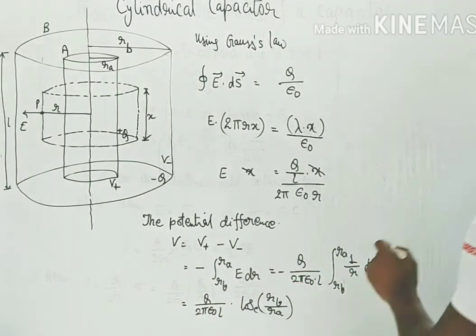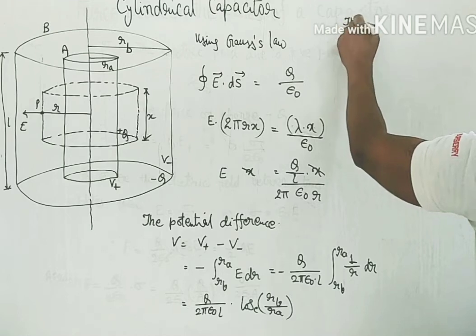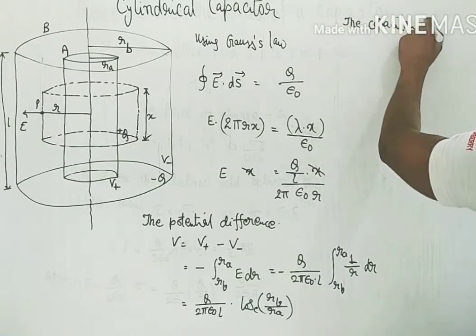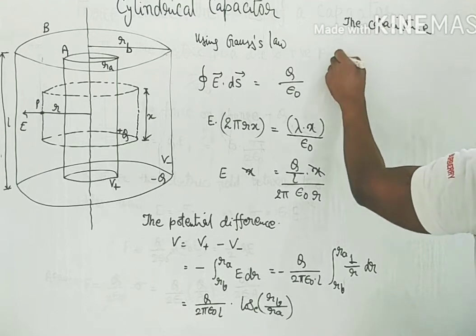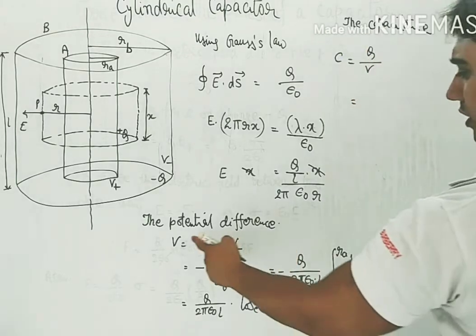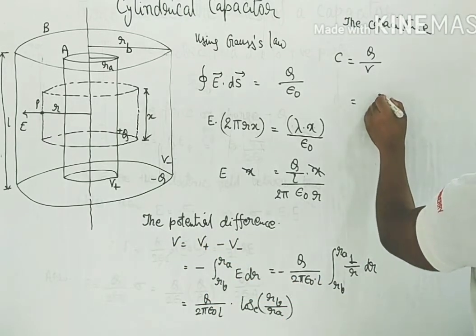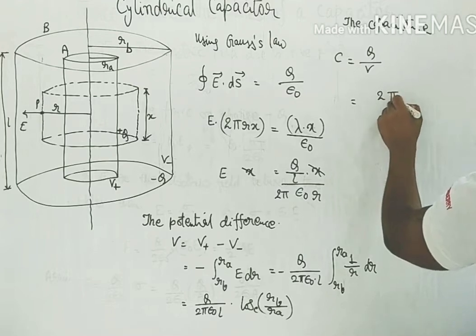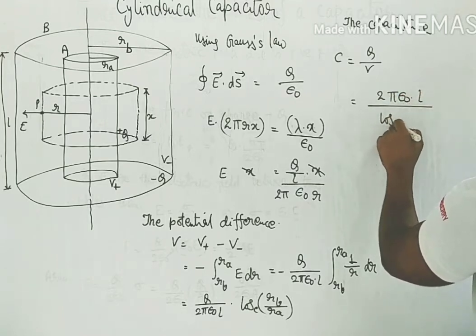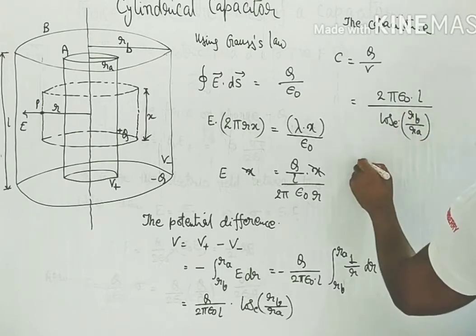Directly we can now find the capacitance. C equals Q upon V, and the value of V is this expression. So C equals 2 pi epsilon naught l upon log base e of R_B upon R_A.